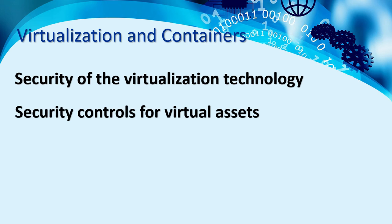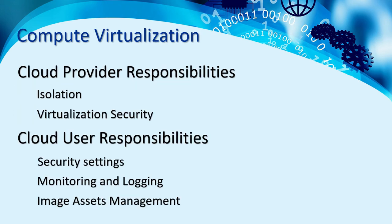Compute virtualization abstracts the running of code — including the operating system — from the underlying hardware. Instead of running directly on hardware, code runs on top of an abstraction layer that enables more flexible usage, such as running multiple operating systems on the same hardware. Hypervisors are configured to isolate virtual machines from each other.